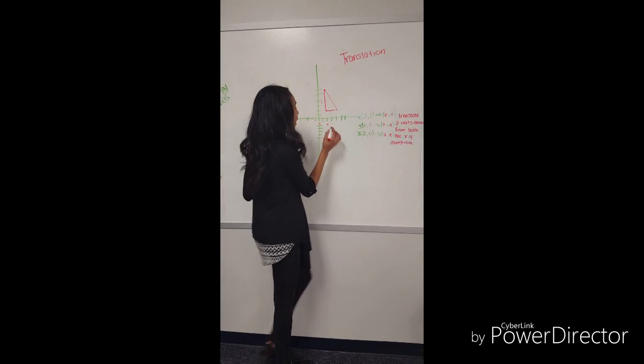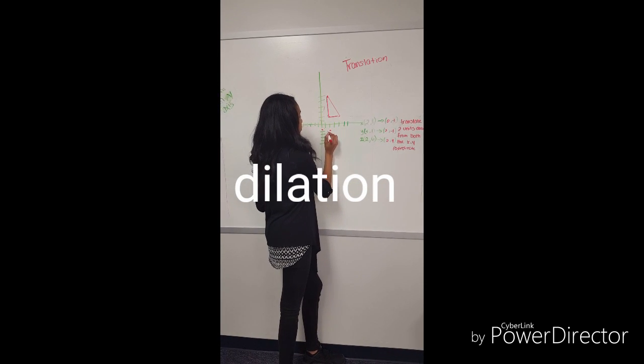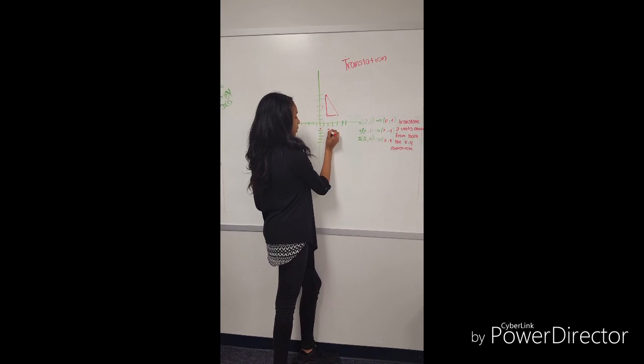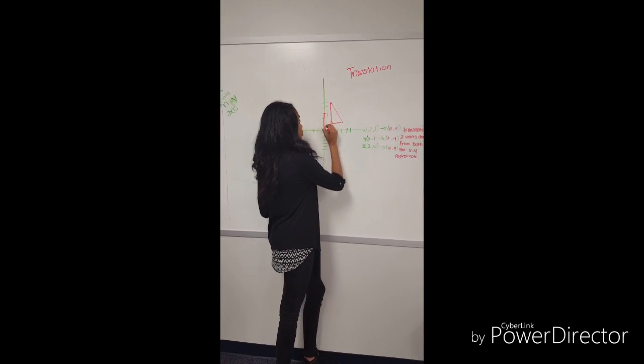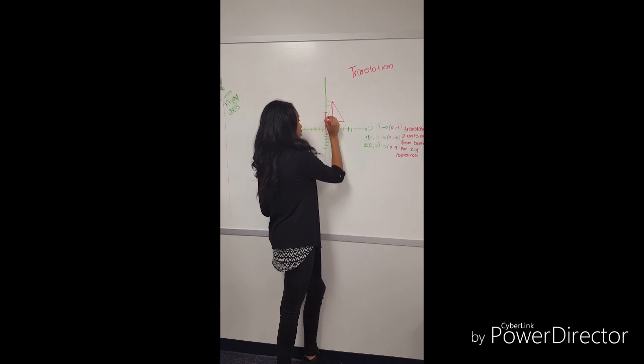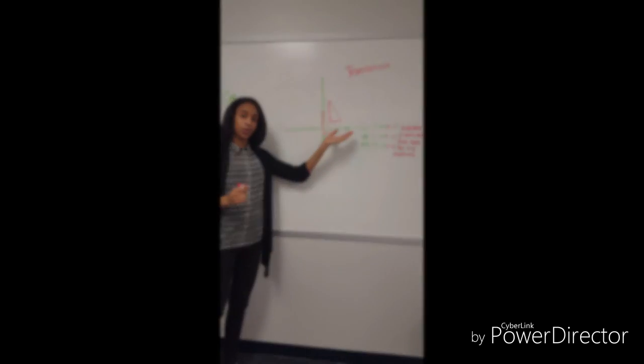We have to plot it at 0, negative 1 here, 2, negative 1 here, and 0, 4, which makes a whole new triangle, but the points are moved down to 2.